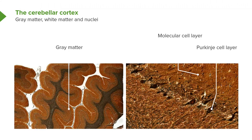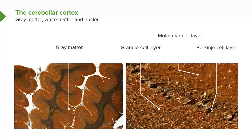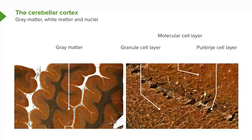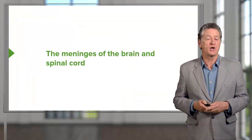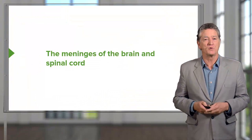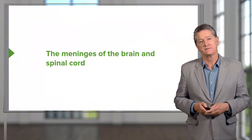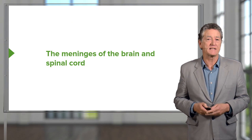The cerebellar cortex is made up of three different layers of cells, and the most important one is the Purkinje layer in the centre. That Purkinje cell layer is a layer of cells that has an enormous dendritic branching pattern. It receives a lot of information from other parts of the brain and then sends its message via one axon further on.